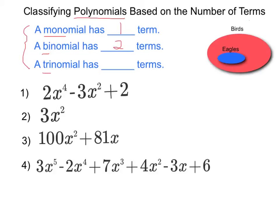And likewise the prefix tri means three. Tricycles have three tires. So basically a trinomial is referring to a polynomial that has three terms.